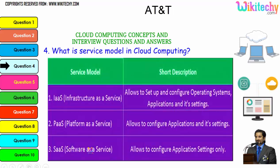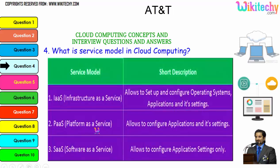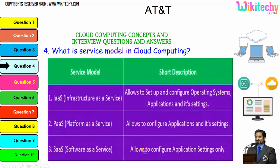The three major service models are: first, Infrastructure as a Service, which allows you to set up and configure the operating system, application, and its settings — you are given a server and can install whatever operating system or software you want. Second, Platform as a Service, where you are allocated a specified operating system and can put any applications and settings. Third, Software as a Service, where you are given a software and can do whatever application settings you want.